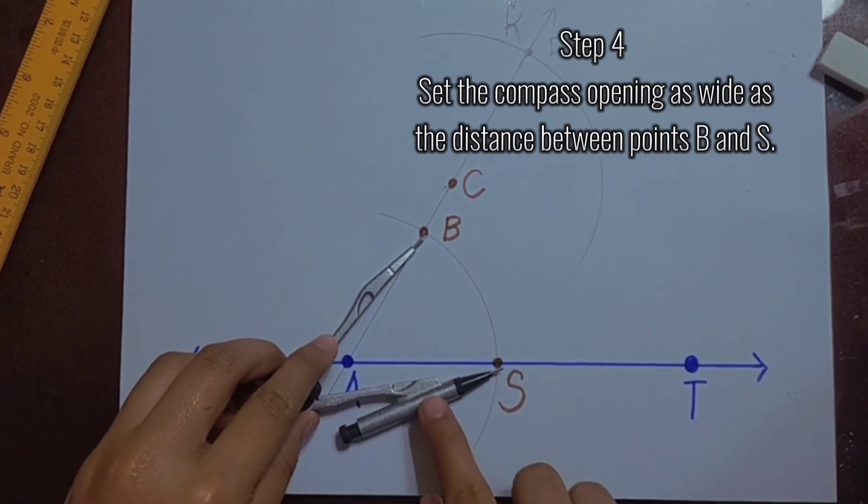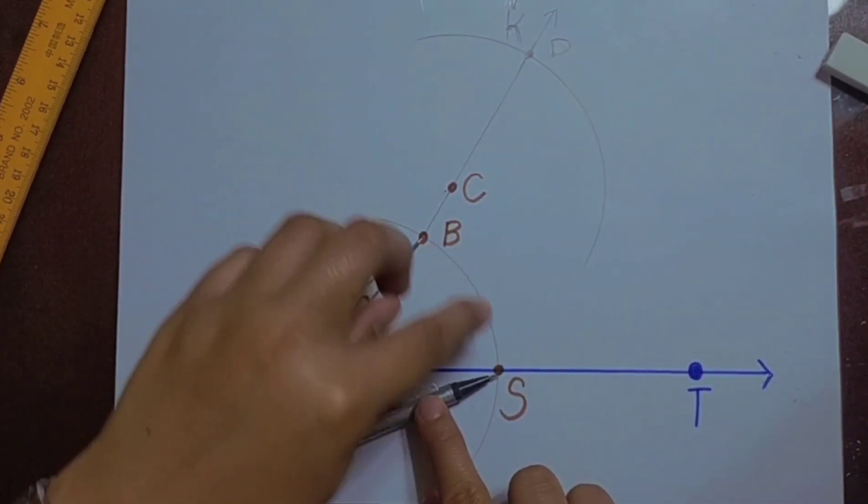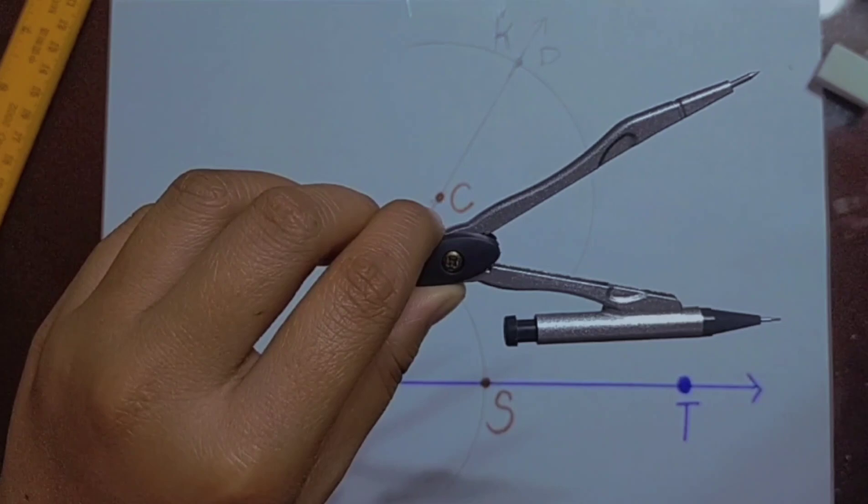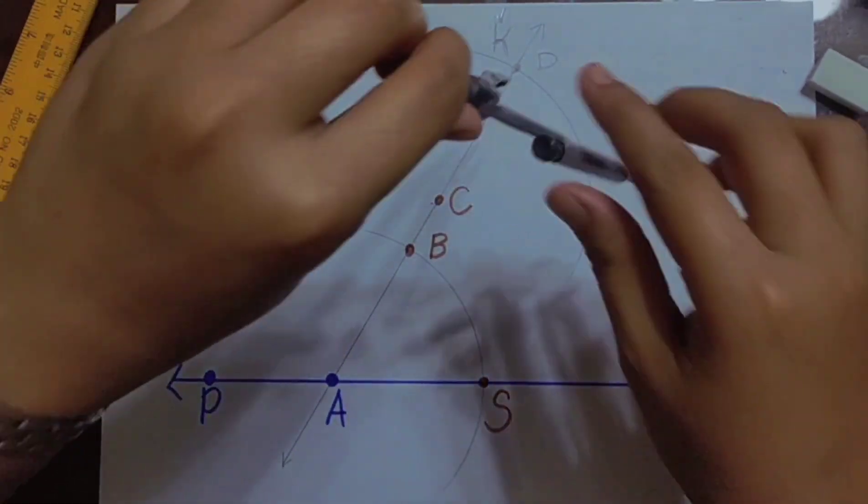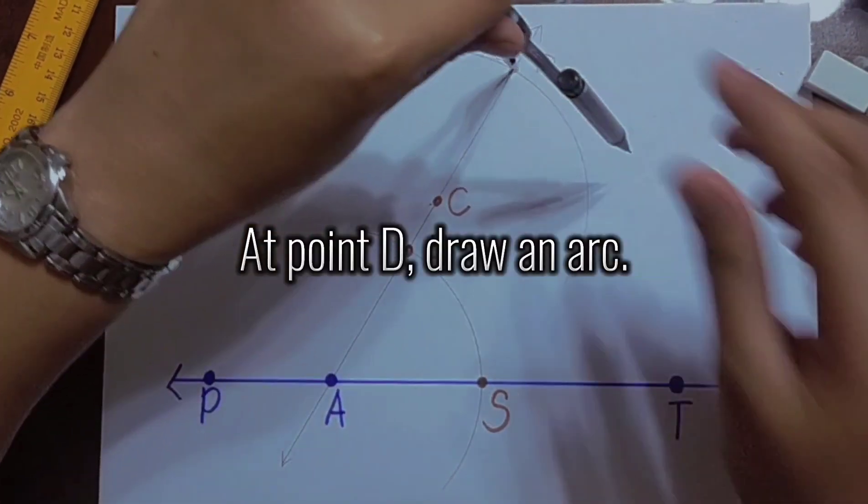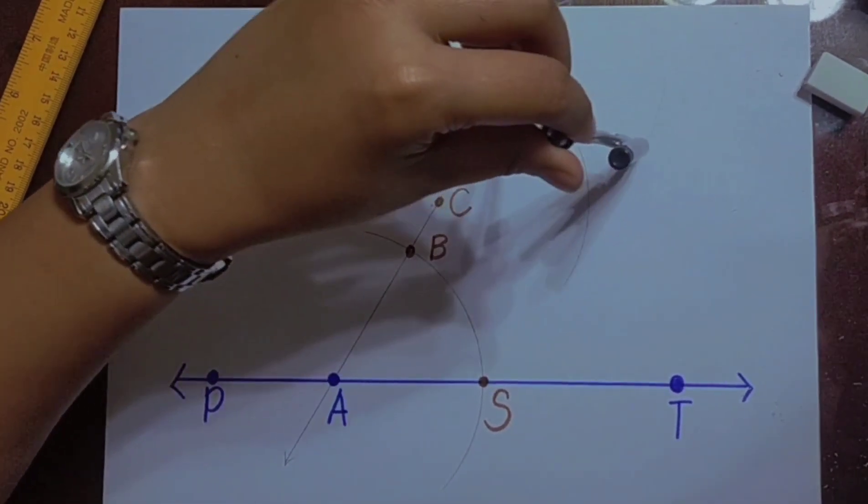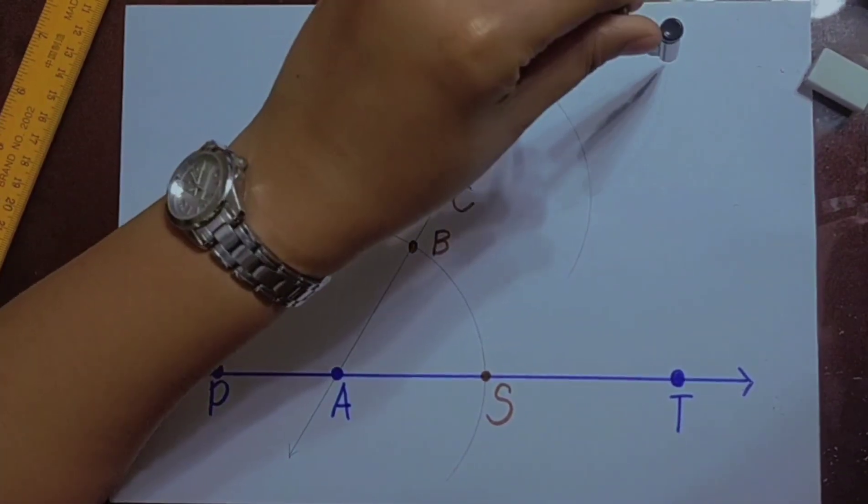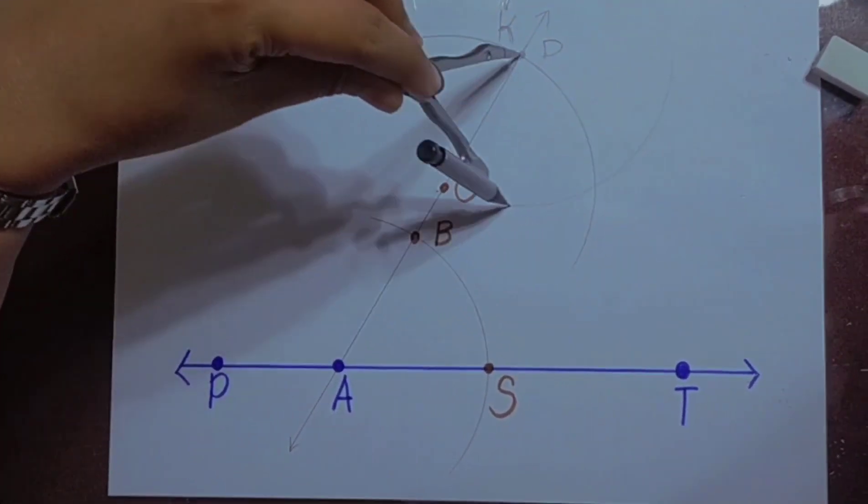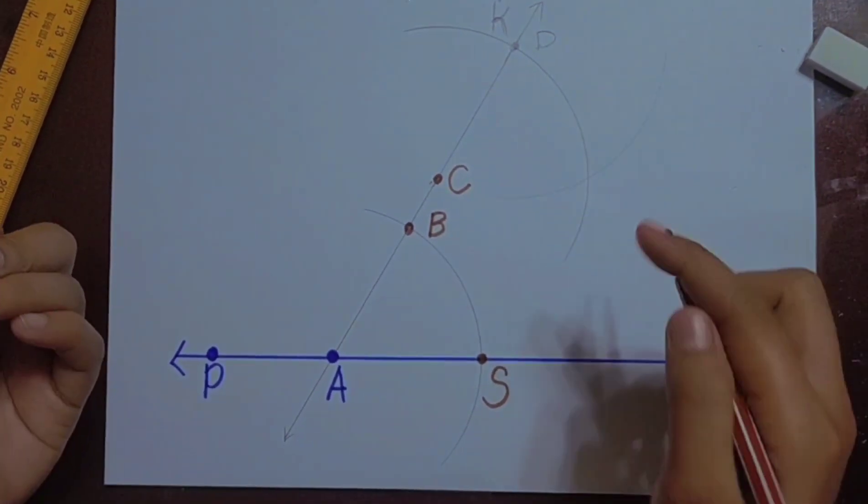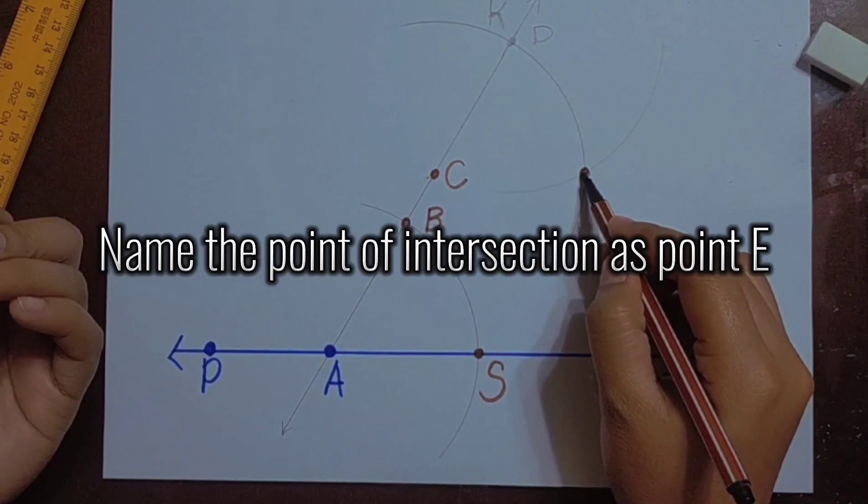Step 4: Set the compass opening as wide as the distance between points B and S. At point D, draw an arc. Name the point of intersection as point E.